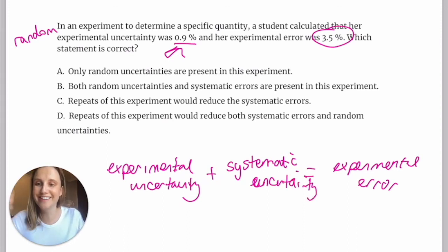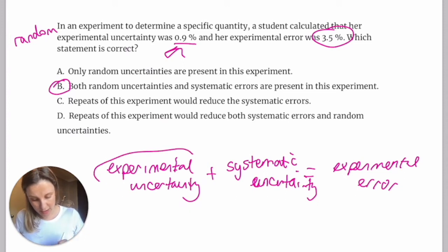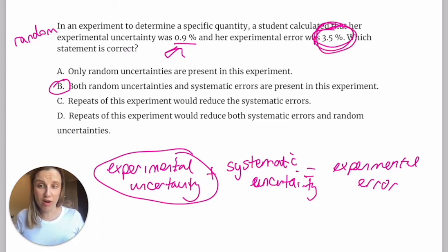So the only thing that can be causing that is really the systematic uncertainties. Systematic uncertainty. So the systematic uncertainties could be any of those things we talked about before that must be adding in to cause the experiment to be bad. So the answer to this one is that you have both random and systematic errors present in this experiment. They must both be there because otherwise we would expect the experimental uncertainty to encompass all of the experimental error that she gets as her percentage.